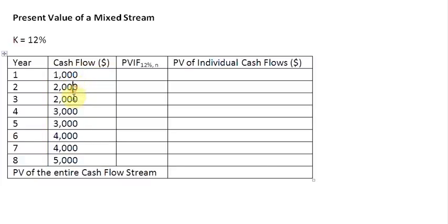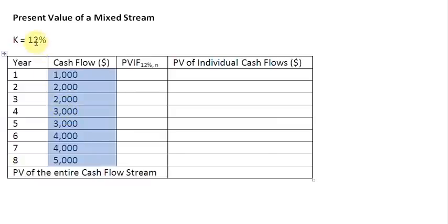The cash flows are 1000, 2000, 2000, 3000, 3000, and so on. What we do in such a case is multiply each of these individual cash flows with the respective present value interest factor of $1. Be careful: do not multiply these cash flows by the present value interest factor of an annuity of $1. What we need is the present value interest factor of $1 at K percent, which in this case is 12%, for each of the years.